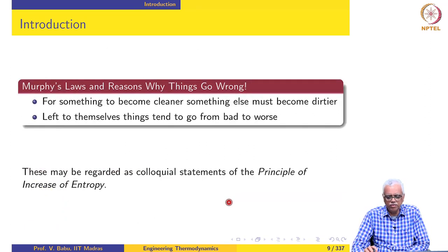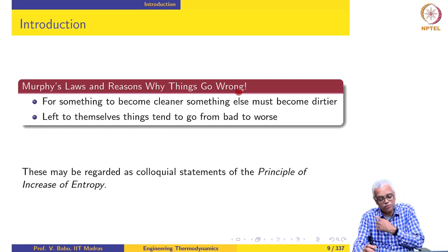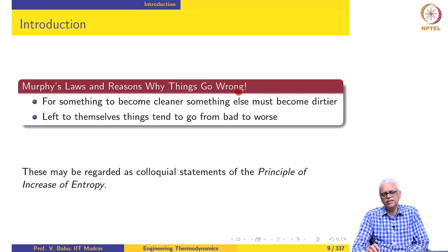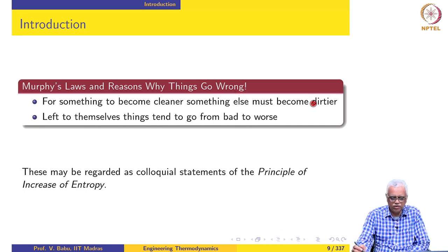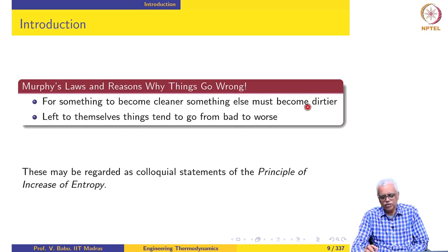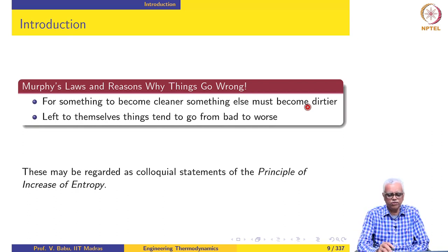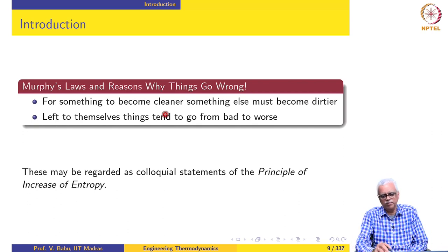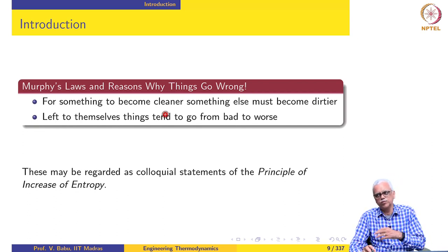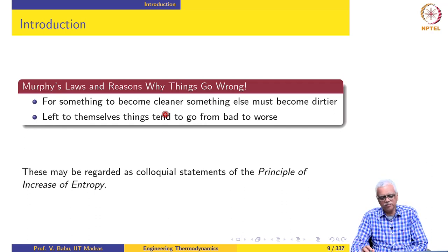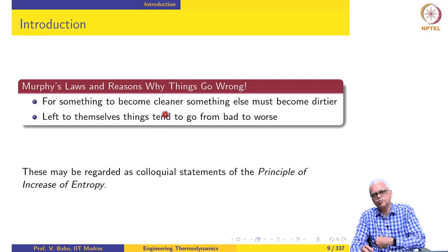Most of you may also be familiar with Murphy's laws and reasons why things go wrong. There is a very uncanny resemblance between Murphy's laws and the laws of thermodynamics. For instance, one of Murphy's laws is something like: for something to become cleaner, something else must become dirtier. You may consider this as a colloquial form of the principle of increase of entropy. We actually reduce the entropy at some place by making it cleaner, but that comes at a certain price — when you clean something, the surroundings become dirtier.